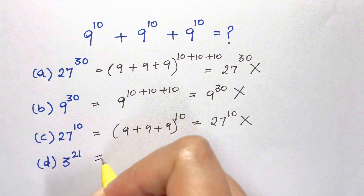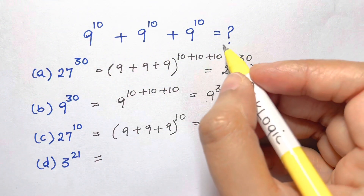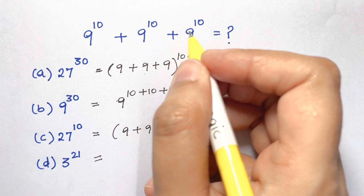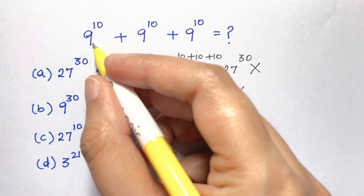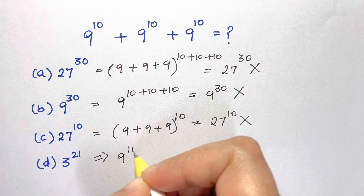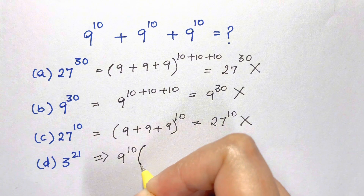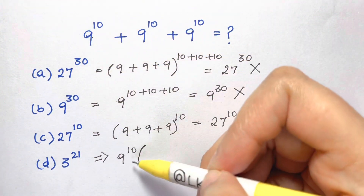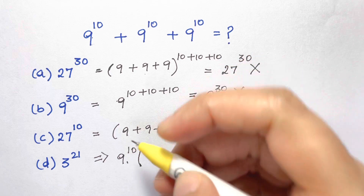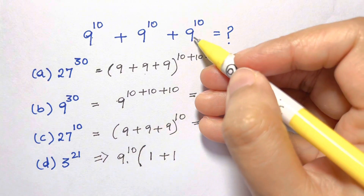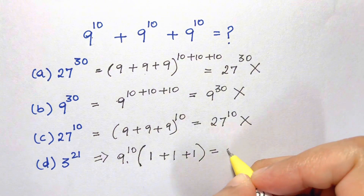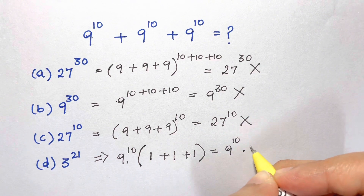Let's find out how D is the correct answer. We write down: 9 to the power of 10 plus 9 to the power of 10 plus 9 to the power of 10. Since 9 to the power of 10 is common, we take it out. Dividing each term by 9 to the power of 10 leaves 1 each time, so we have 9 to the power of 10 times (1 plus 1 plus 1), which is 9 to the power of 10 times 3.